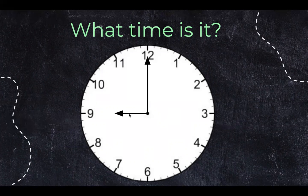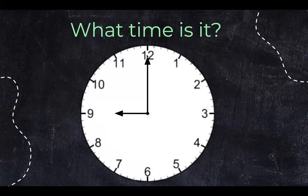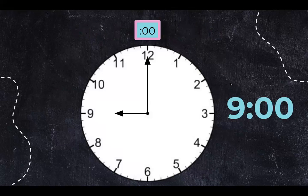Well, the hour hand I know is the short one and it's pointing at nine and the minute hand is pointed straight up and when I count by five around the clock I know that this is zero zero. So we have nine o'clock.